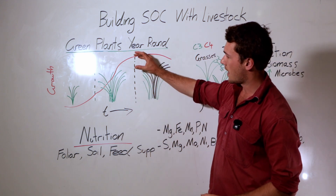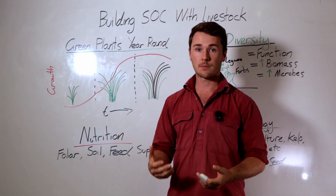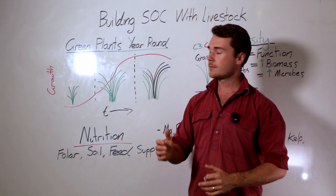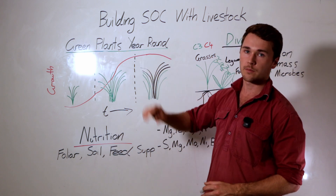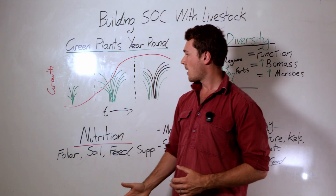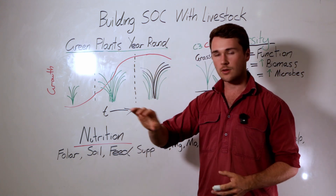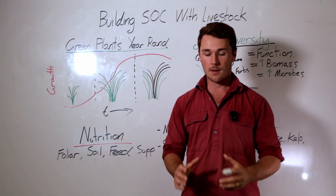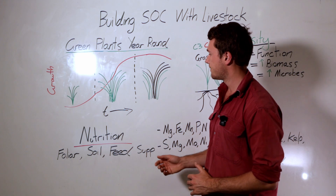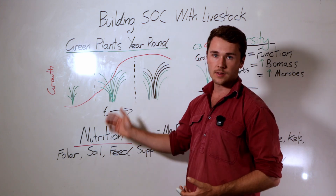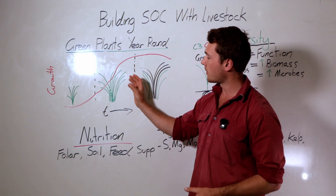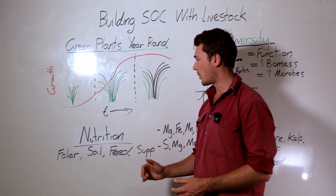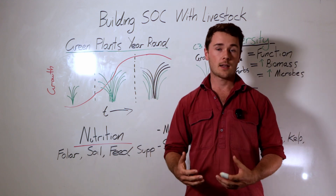During the growing season, you want to maintain as much green leaf as possible — really just clip the top of the grass. Tight grazing periods where you just take the top off are best, because if you take too much off it takes even longer to recover. During the non-growing season when things start to go dormant, you can come in with a heavier graze, making sure you leave enough plant to cover the soil and maintain growing points.